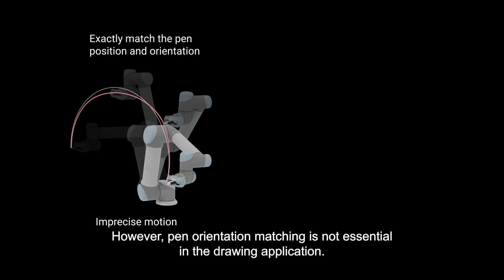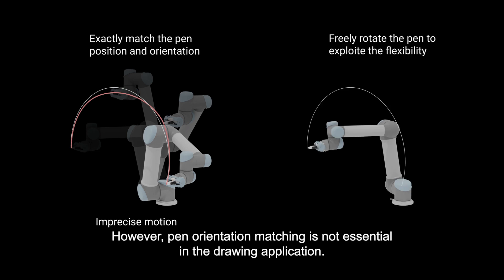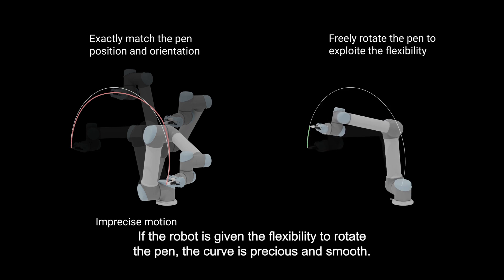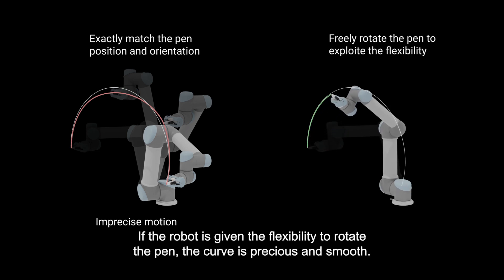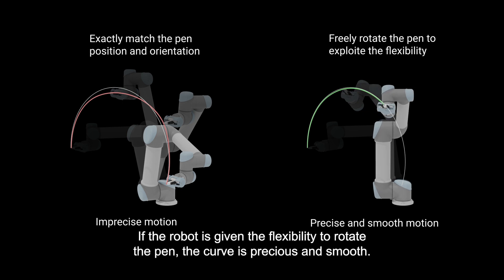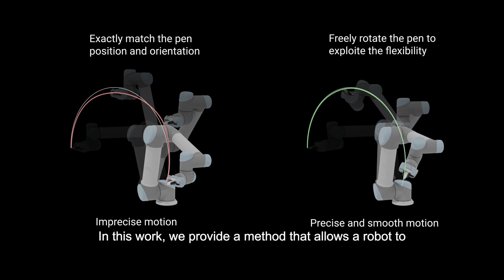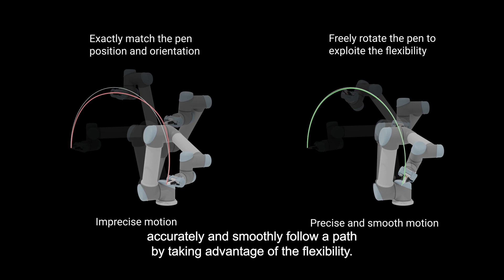However, pen orientation matching is not essential in the drawing application. If the robot is given the flexibility to rotate the pen, the curve is precise and smooth. In this work, we provide a method that allows a robot to accurately and smoothly follow a path by taking advantage of this flexibility.